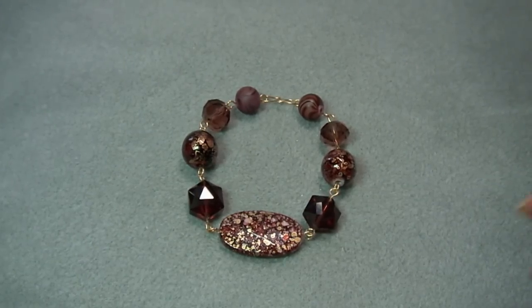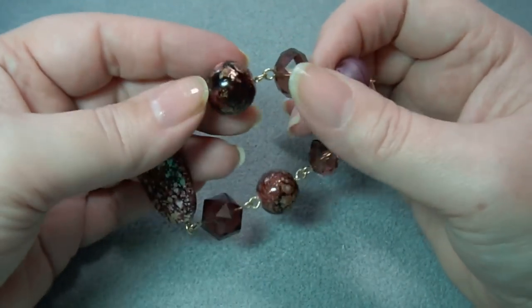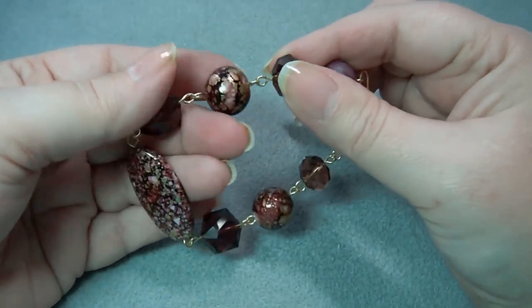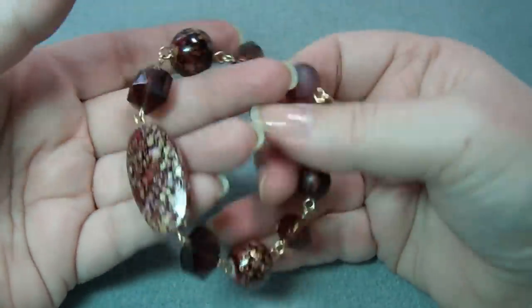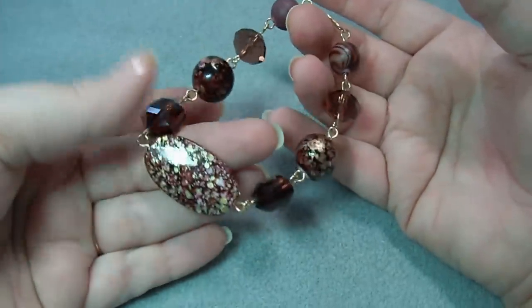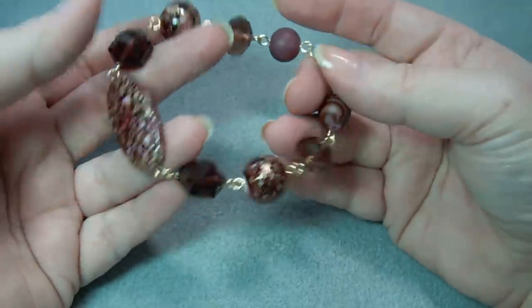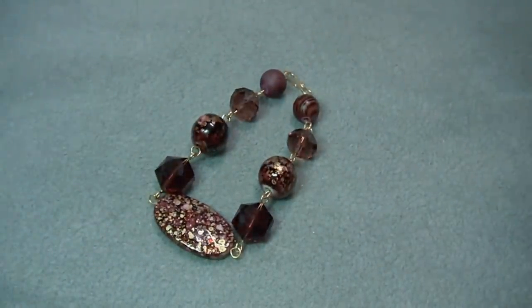Hi, this is Gail Nittles. Today we're going to make a bracelet with simple loops. These are just loops, not wrapped or anything like that—just loops on either side of the bead, put together with a clasp. It's very easy and quick. You can put together a bracelet in no time at all. Let's get started.